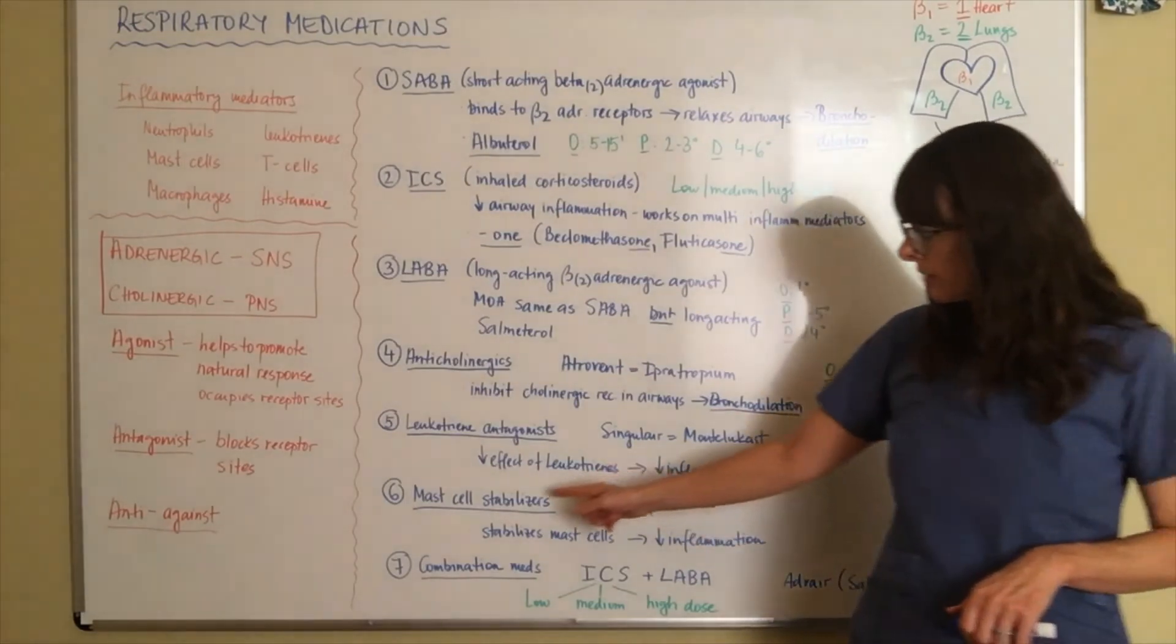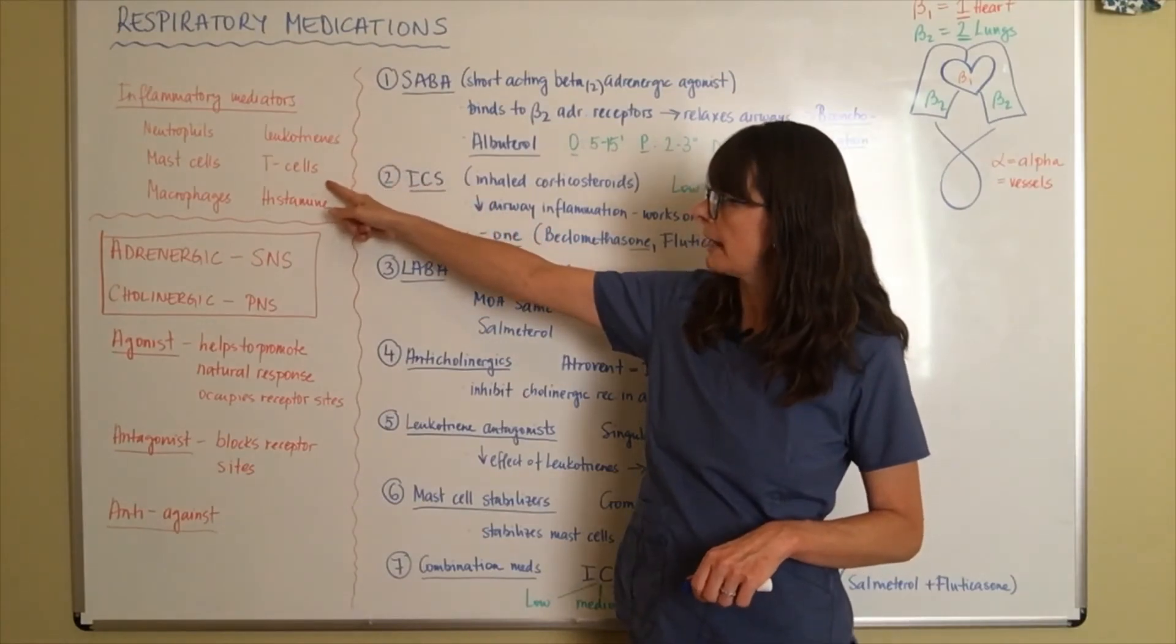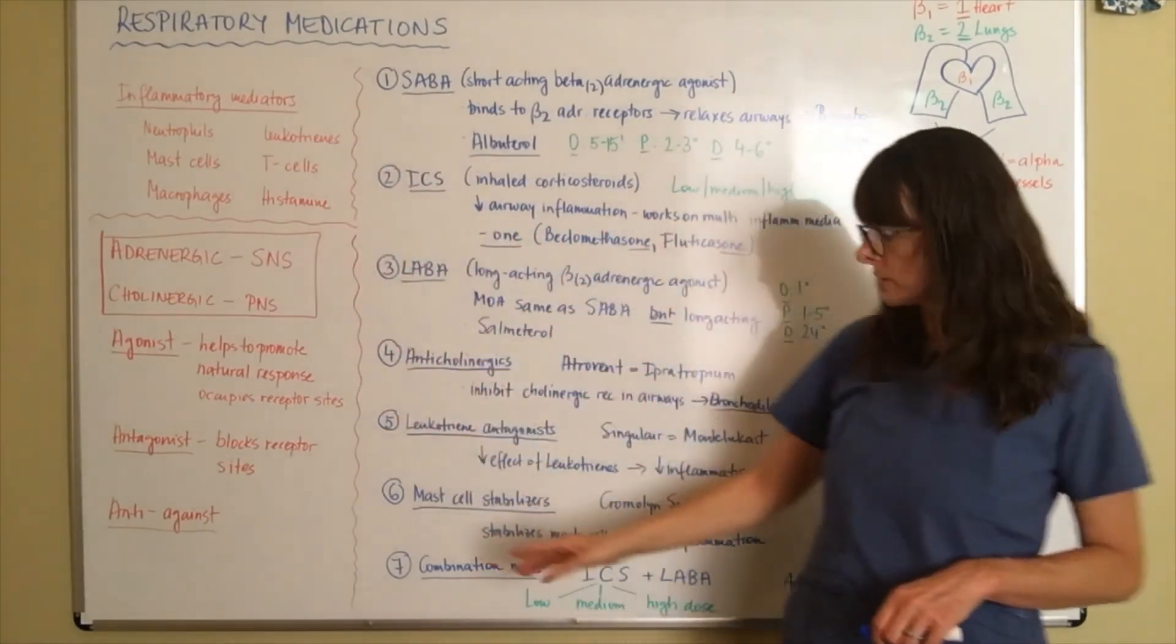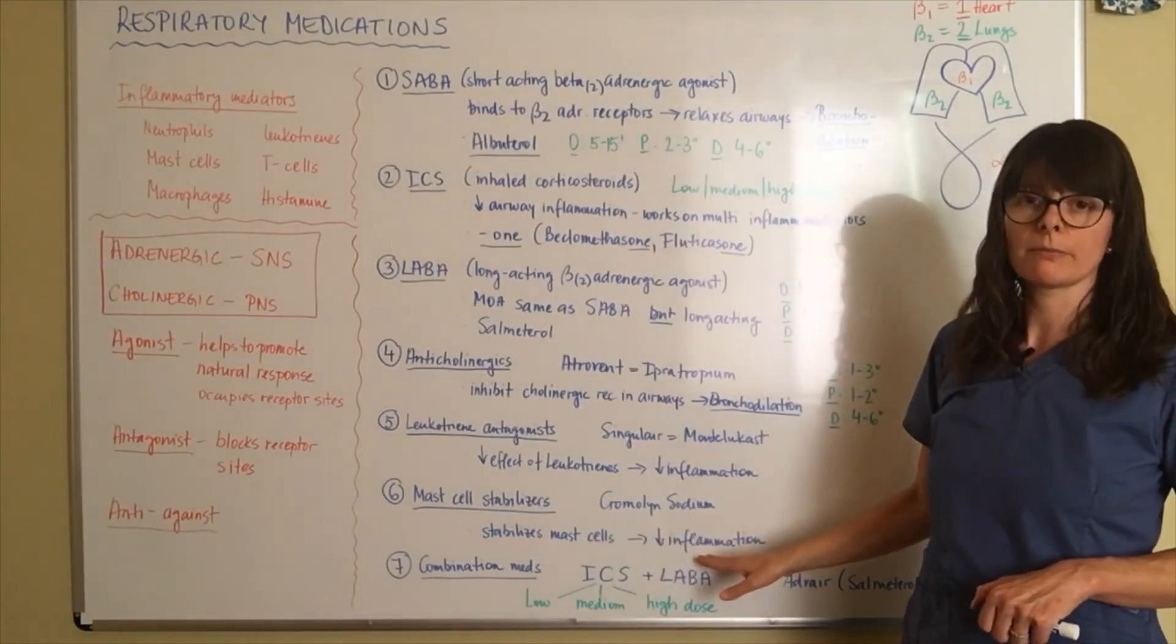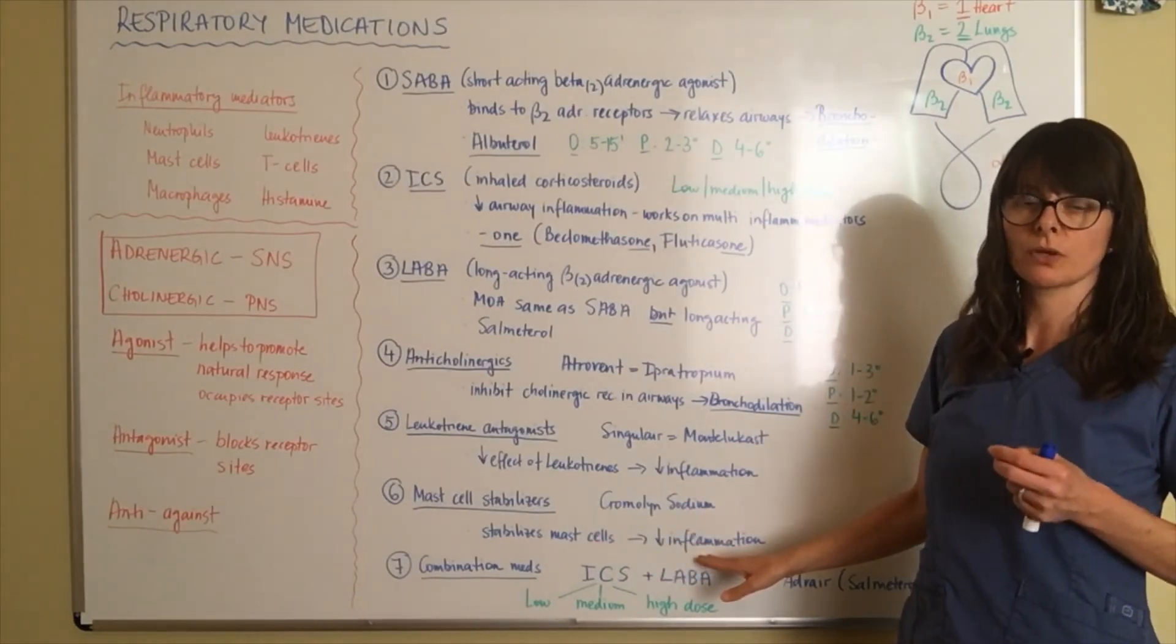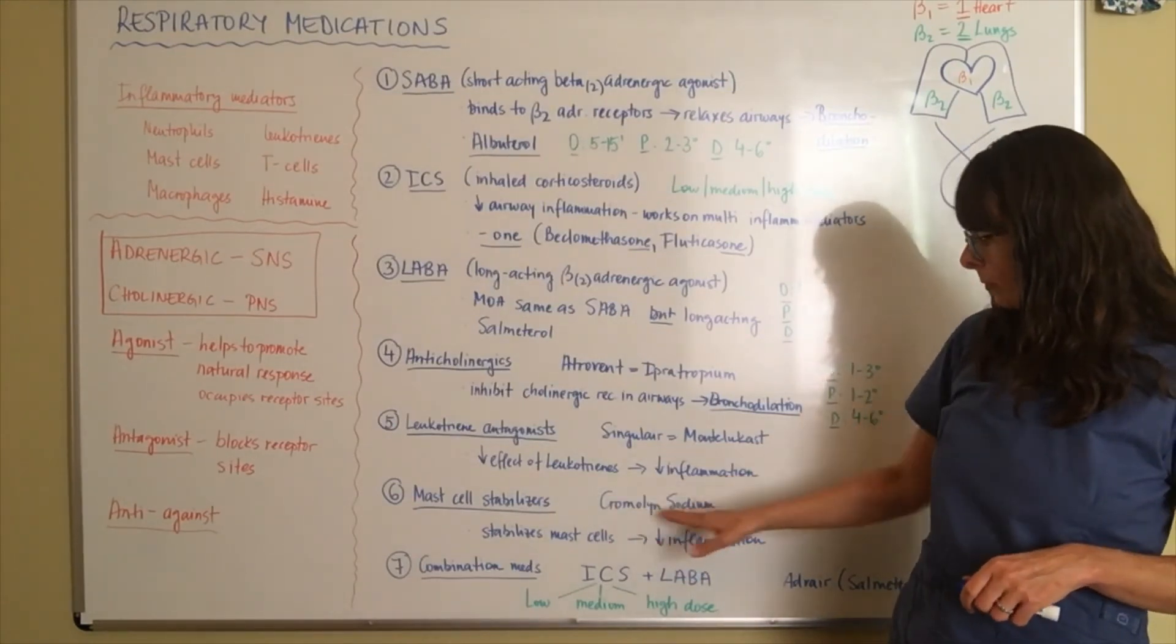Now then further, we have mast cell stabilizers. Again, mast cells are different inflammatory mediators. And when we stabilize the mast cells, then again, we decrease inflammation. So they're very specific to those specific inflammatory markers. And an example would be cromolyn sodium.